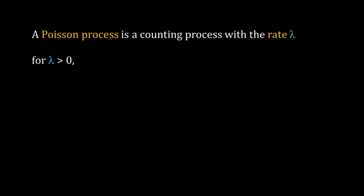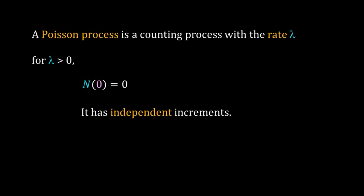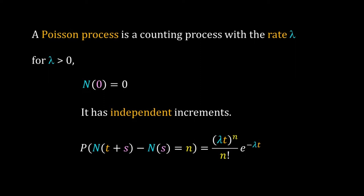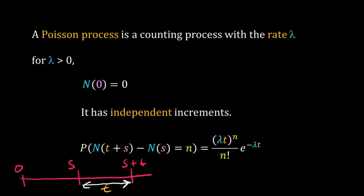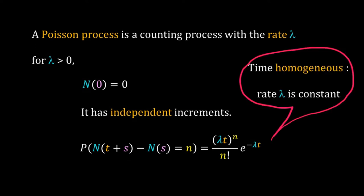A Poisson process is a counting process with rate lambda such that the initial value of the count is 0. The events are independent, so the increment in the count is an independent increment, and the number of events happening in an interval follow Poisson distribution. Here the time interval is t from s to s plus t. When the rate lambda is independent of time, the Poisson process is called a homogeneous Poisson process. In this course we will consider only time-homogeneous Poisson processes.